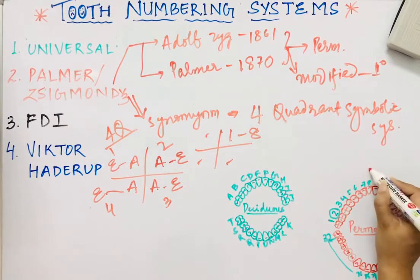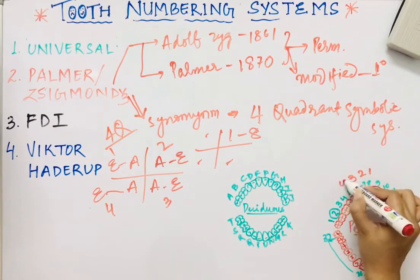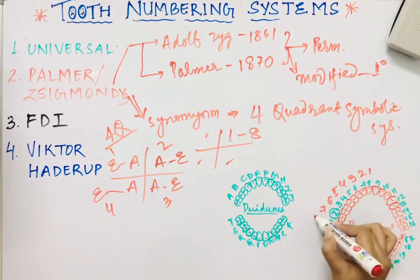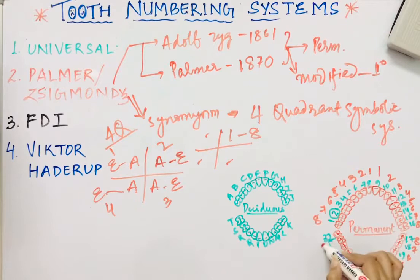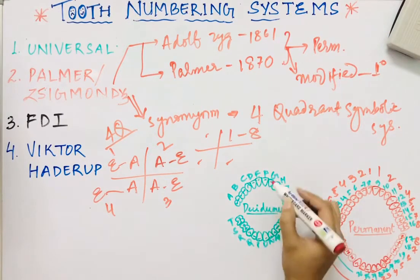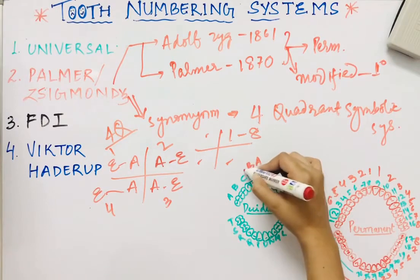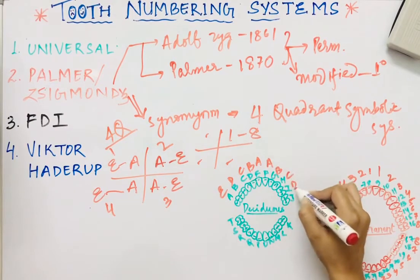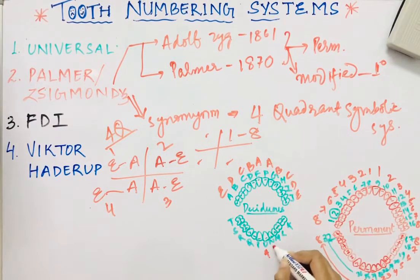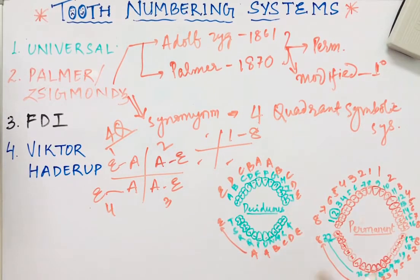In this system, numbering within each quadrant starts from the central incisor as 1, then 2, 3, 4, 5, 6, 7, 8 moving outward toward the third molar. This applies to all four quadrants. For deciduous, each quadrant goes A, B, C, D, E from the central incisor outward.